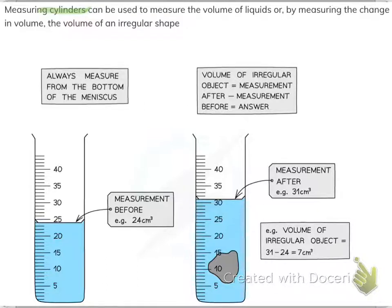You need to remember to always measure from the bottom of the meniscus. If you zoom in on this picture, this is the meniscus. If you have an irregular object, like for example a stone, you need to do the measurement after minus the measurement before. The measurement after is 31 centimeter cubed and the measurement before is 24, so 31 minus 24 is 7 centimeter cubed. So 7 centimeter cubed becomes its volume — that's how you calculate the volume of an irregular object.